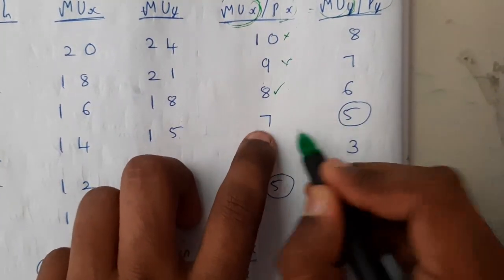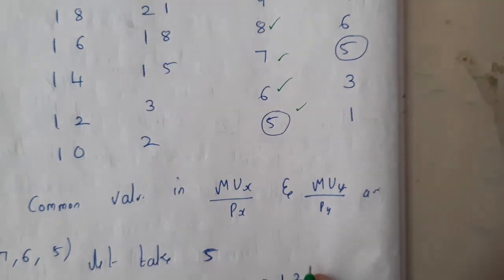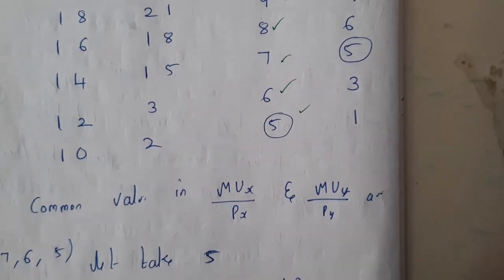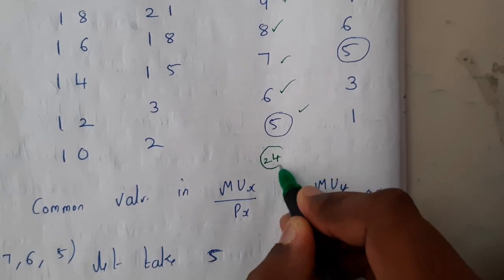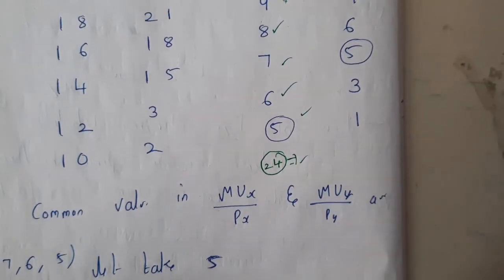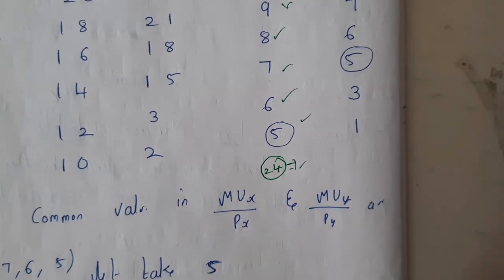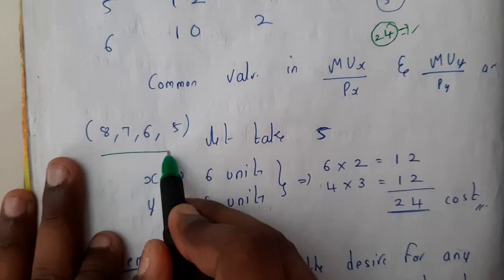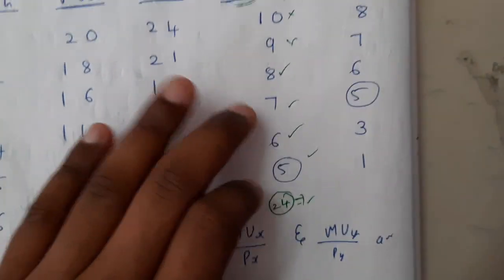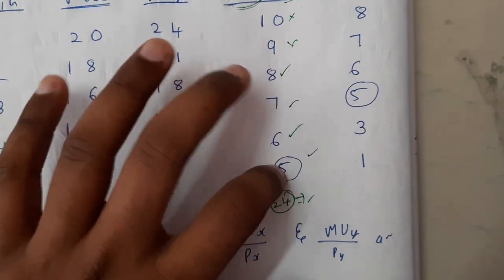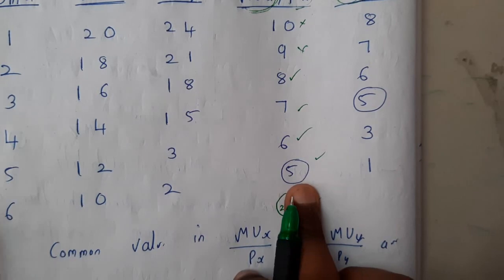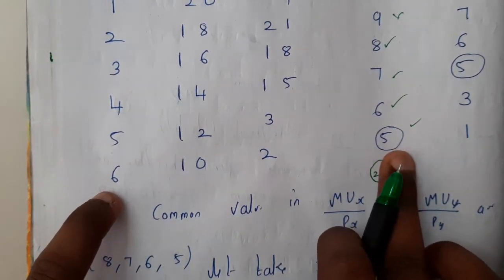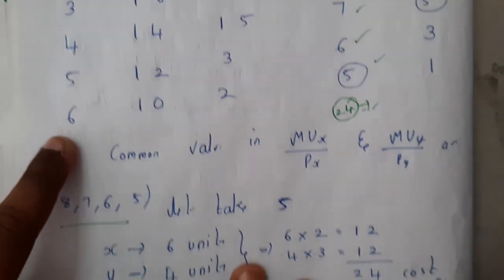8 there, 7 there, 6 there, 5 there. Let us assume in the question they gave that the maximum money or coins you have is 24 coins. In 24 coins you need to get maximum satisfaction. These are the common values. You will be assuming any one of these four numbers. Let us assume 5. At 5, the number of units is 6, so we have 6 units of X.